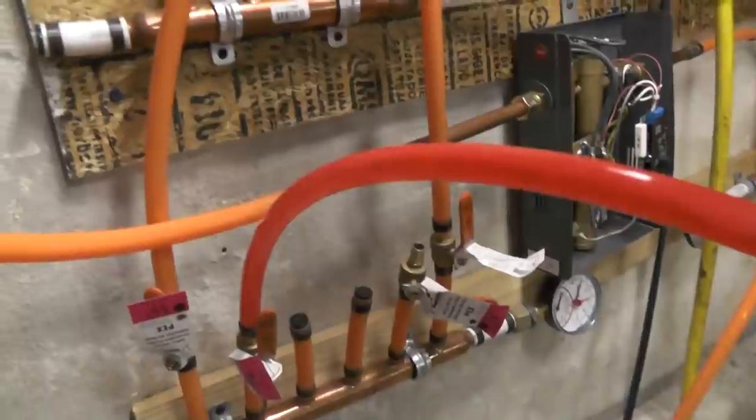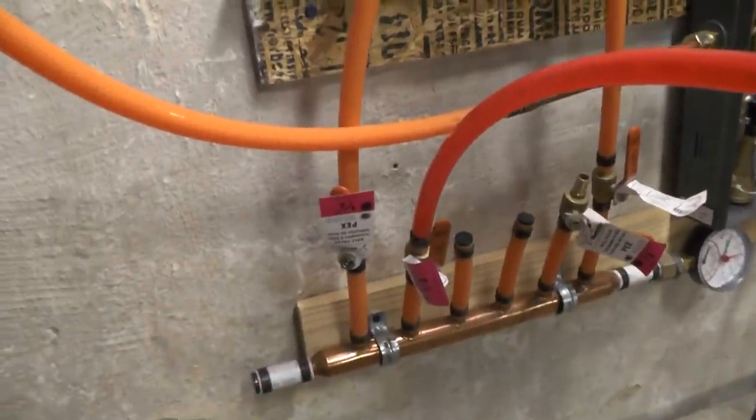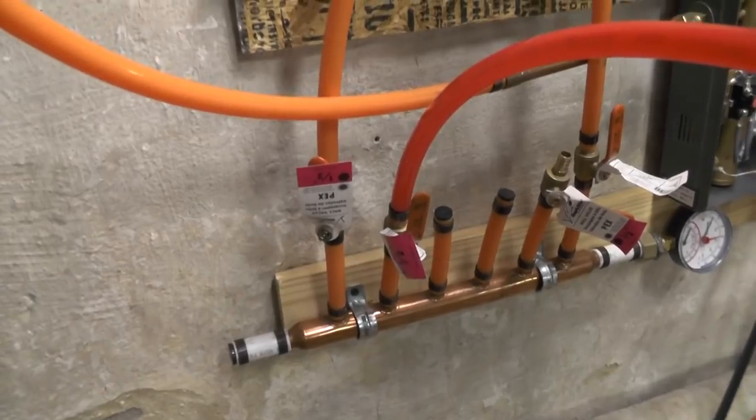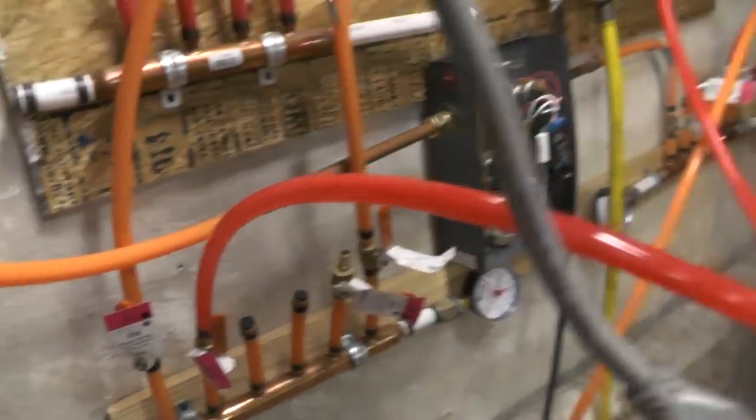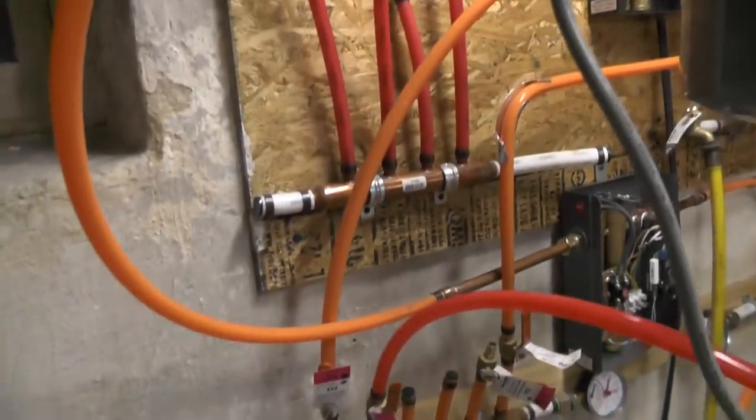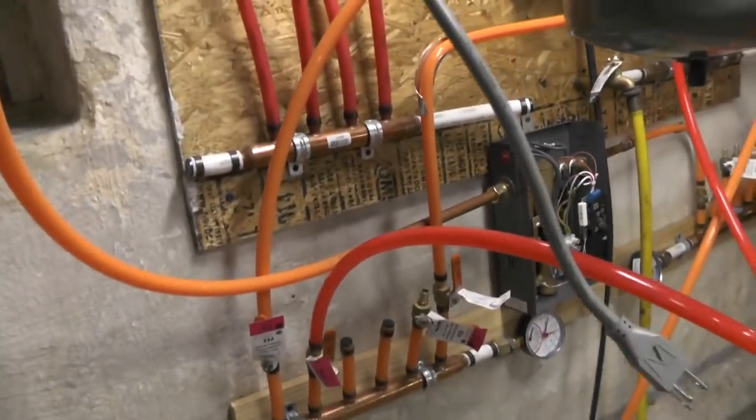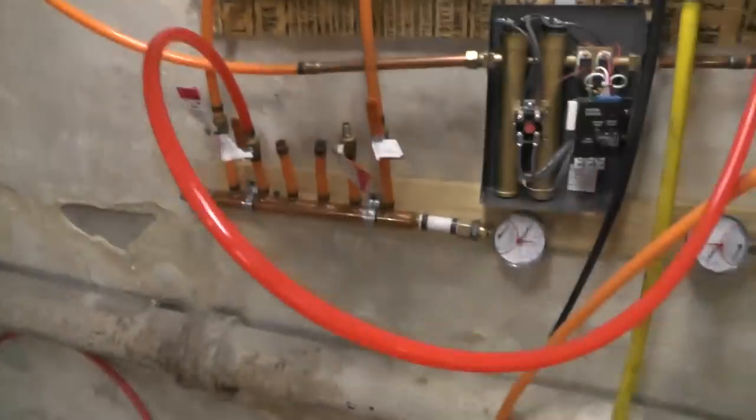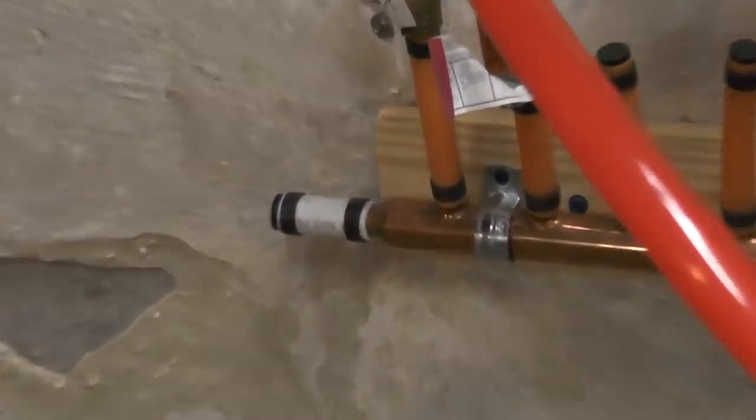So this is my hot water supply to the radiant floor system and then I only have two zones right now. So basically I have the red zone and an orange zone and they go out to the two different floors that are being warmed.